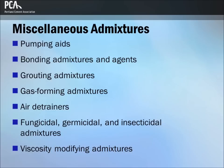There are a variety of admixtures on the market, each with a particular niche purpose. Pumping aids are added to concrete mixtures to improve pumpability, but are not a cure-all — they are best used to make marginally pumpable concrete more pumpable. Bonding admixtures are added to Portland cement mixtures to increase the bond strength between old and new concrete. Bonding agents should not be confused with bonding admixtures; bonding agents are applied to existing concrete surfaces immediately before the new concrete is placed.